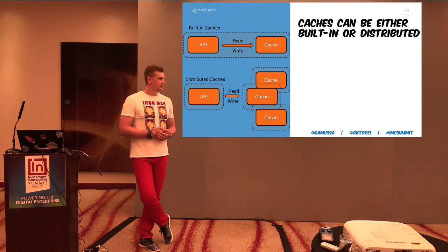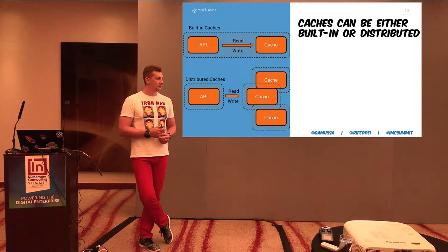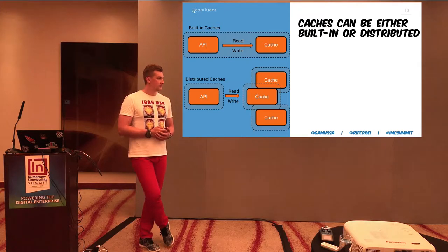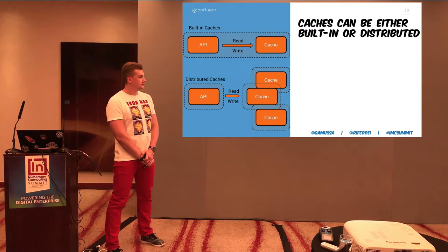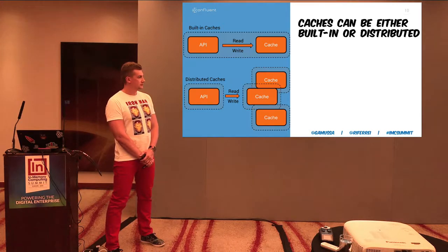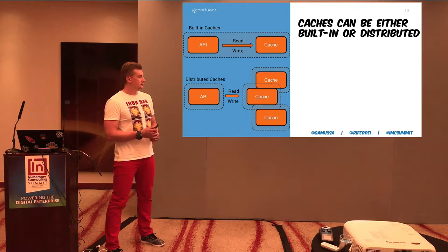The solution is the second type of cache: in-memory data grids, in-memory data fabrics, or in-memory data caches — whatever the industry is calling them these days. The way in-memory data grids work is you have a large set of caches distributed across a network, and in that way you get the data partitioned or replicated across all those nodes. This lets you scale out your architecture and keep up with data volume without crashing your application. There are a lot of in-memory data grids out there that do this very well.